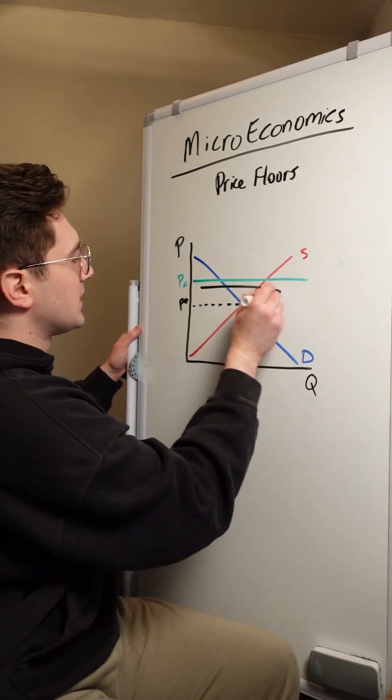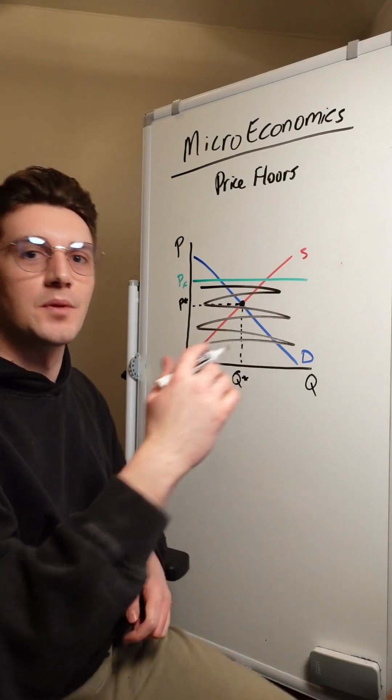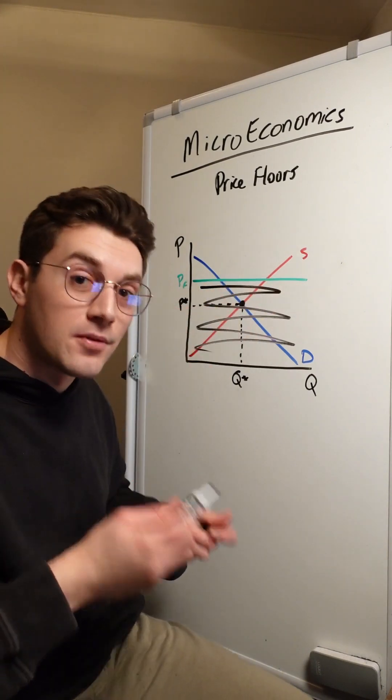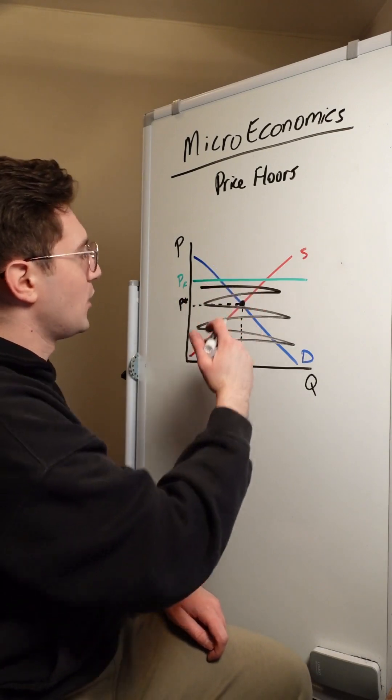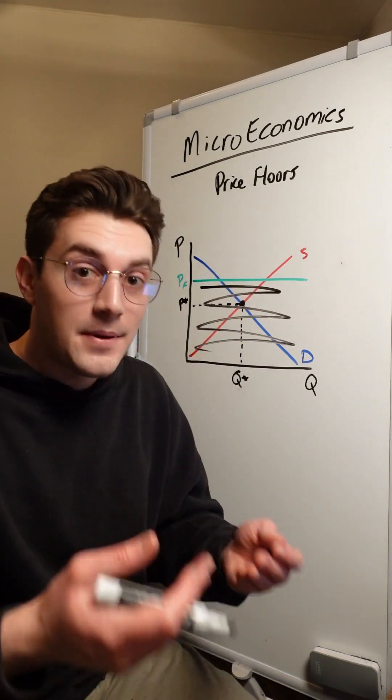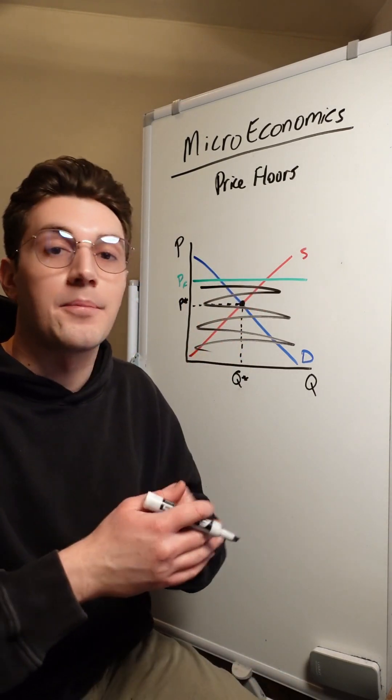Well, what that's going to do is basically just invalidate any prices below this green line, which is a problem here because currently our P star, our equilibrium price, is below that green floor. So it's going to impact how consumers and producers operate in this market.